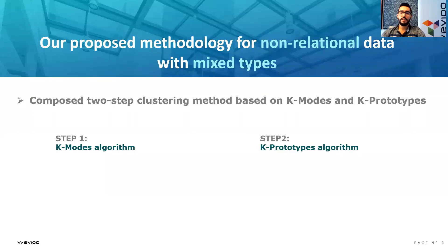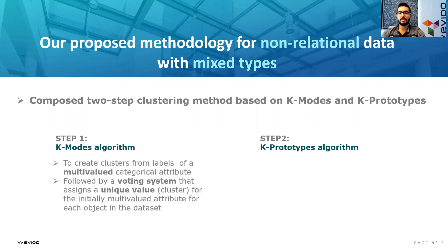Our methodology proposes a solution for multivalued non-relational data with mixed types, using a composite two-step clustering method, based on K-modes and K-prototypes algorithms. We use K-modes in the first step to create clusters from labels of the multivalued categorical attribute, and then we use a voting system that will assign a unique value for each multivalued attribute.